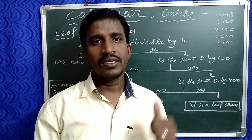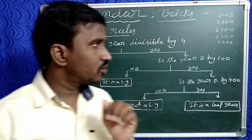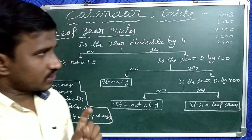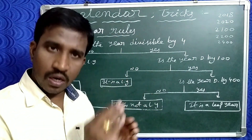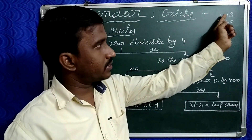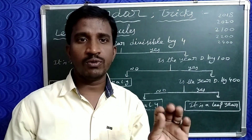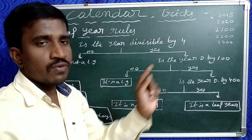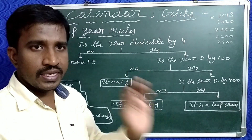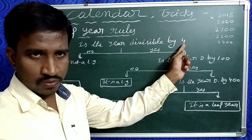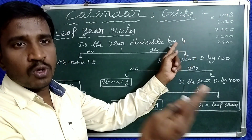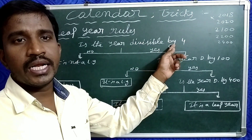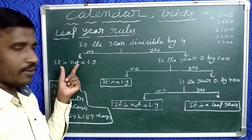Now let's take one year and check if it is a leap year or not. Suppose the given year is 2018. First of all, check if it is divisible by 4 or not. 2018 is not exactly divisible by 4, that is why it is not a leap year. The first step: if the given year divided by 4 is not exactly divisible, then it is not a leap year.